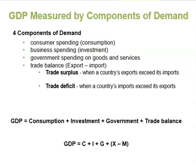Based on these four components of demand, we can measure GDP as: GDP equals consumption plus investment plus government spending plus trade balance. Or we write it as GDP = C + I + G + X − M, where C stands for consumption, I for investment, G for government spending, X for the dollar value of exports, and M for the dollar value of imports.